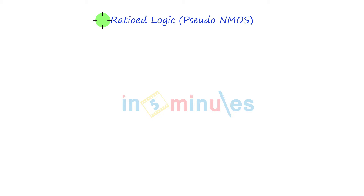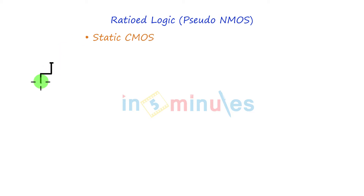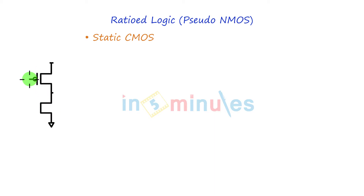Before we get started, we need to understand what are the drawbacks of static CMOS circuits which we already studied. We studied a static CMOS inverter, NAND, NOR, and so on. So we need to understand what were the drawbacks of those circuits. What was the drawback of a static CMOS inverter? Let's get started with that.